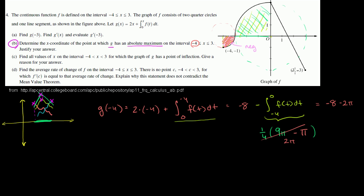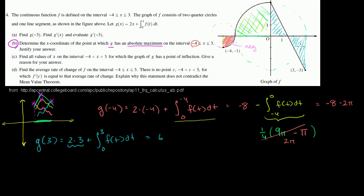Now let's evaluate g at positive 3. G of 3 equals 2 times 3 plus the integral from 0 to 3 of f of t dt. That's 6 plus the integral from 0 to 3. There's positive area on one side and an equal negative area on the other side, and because it's symmetric they cancel out, so the integral equals 0. Therefore g of 3 equals 6.